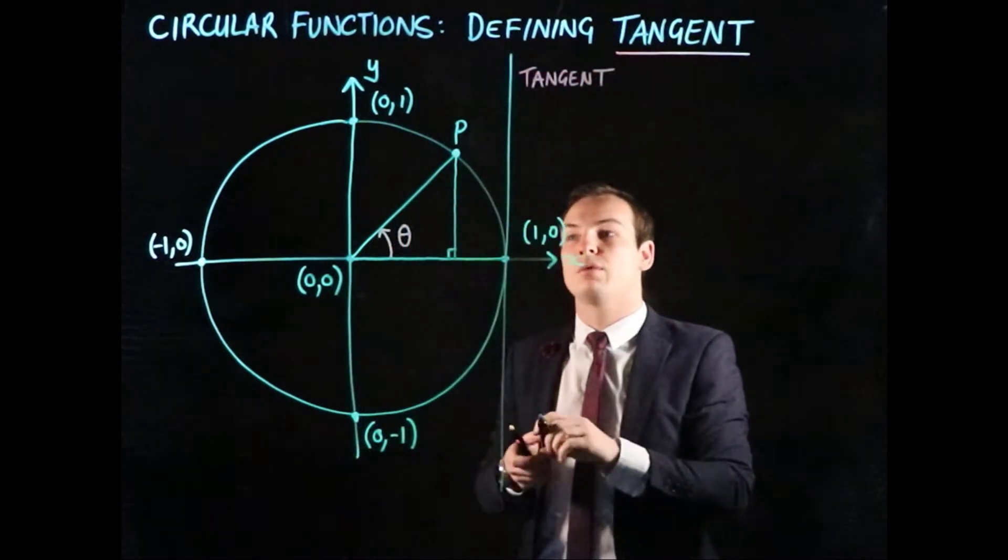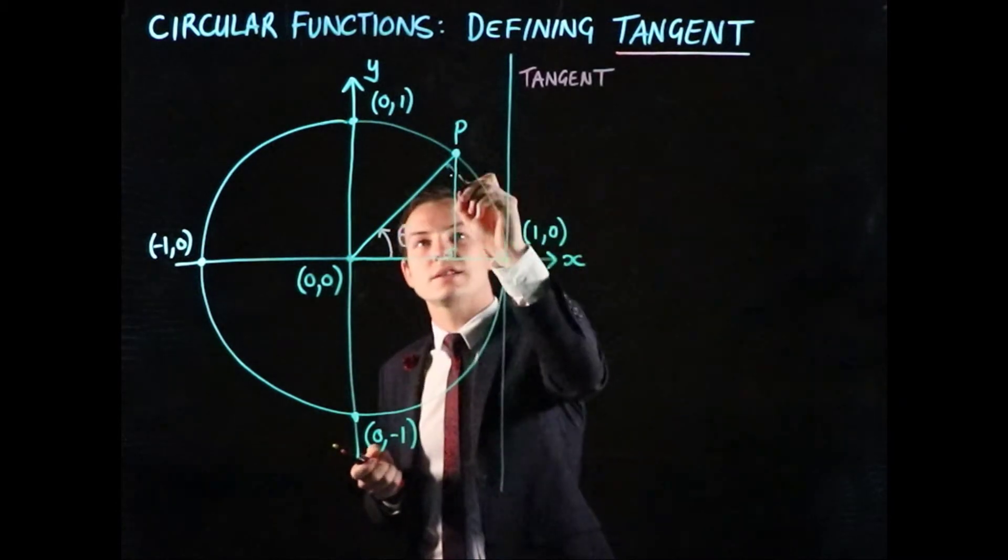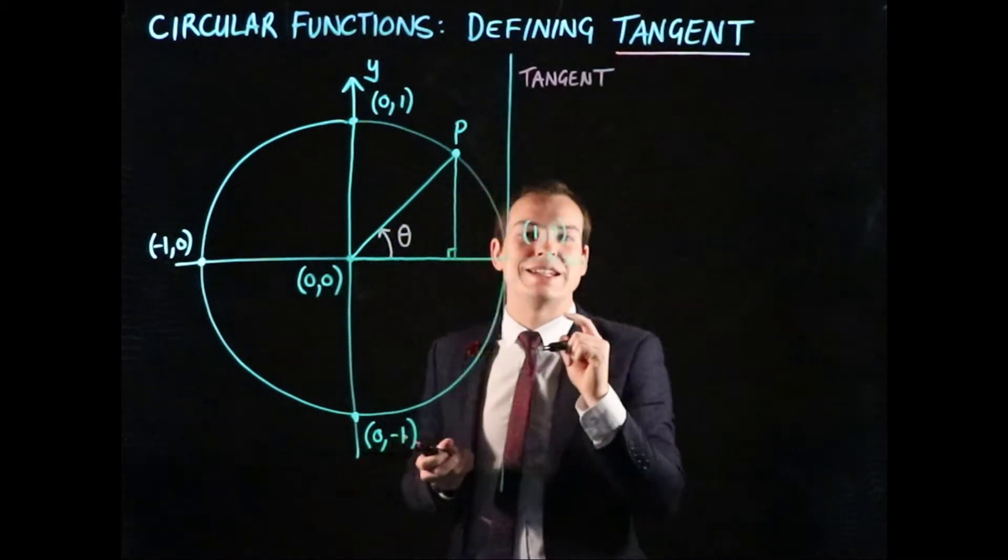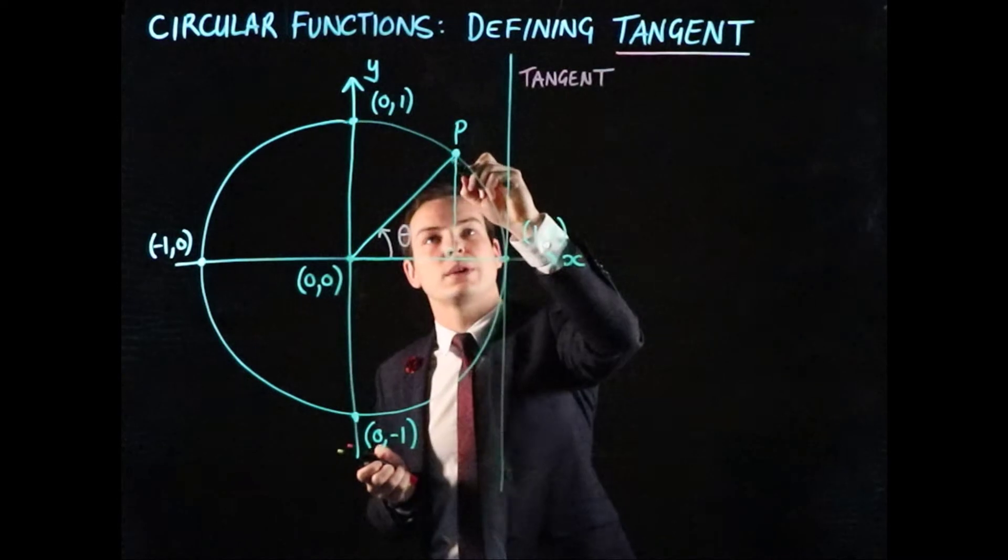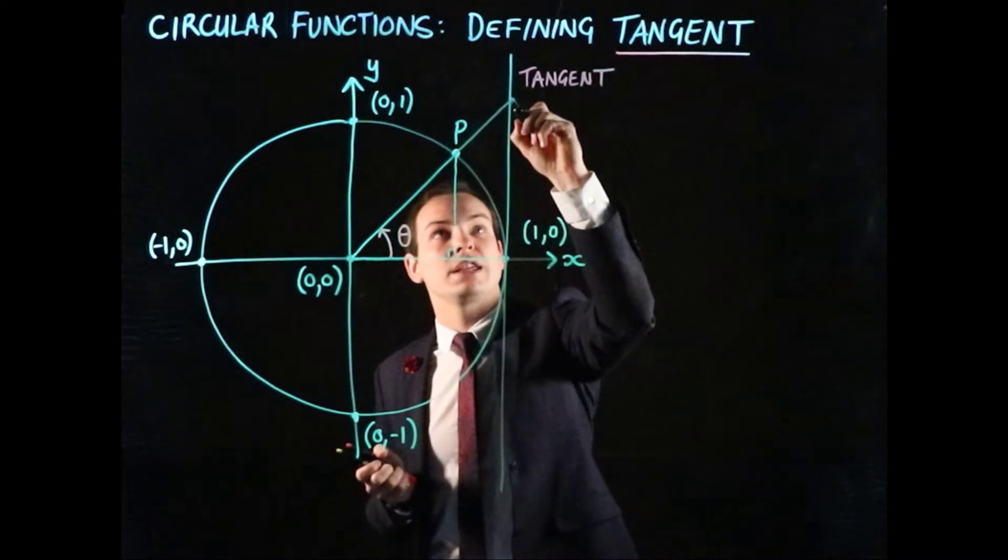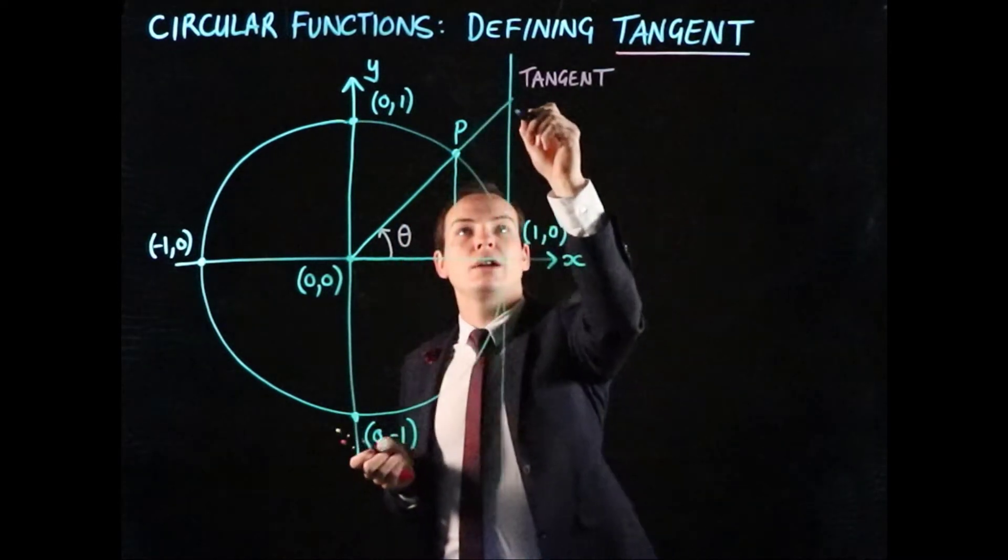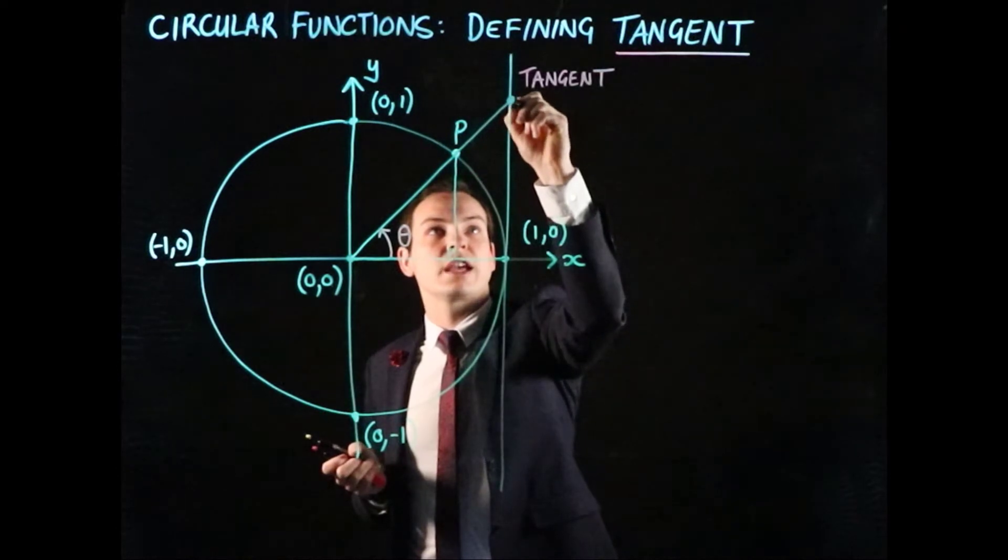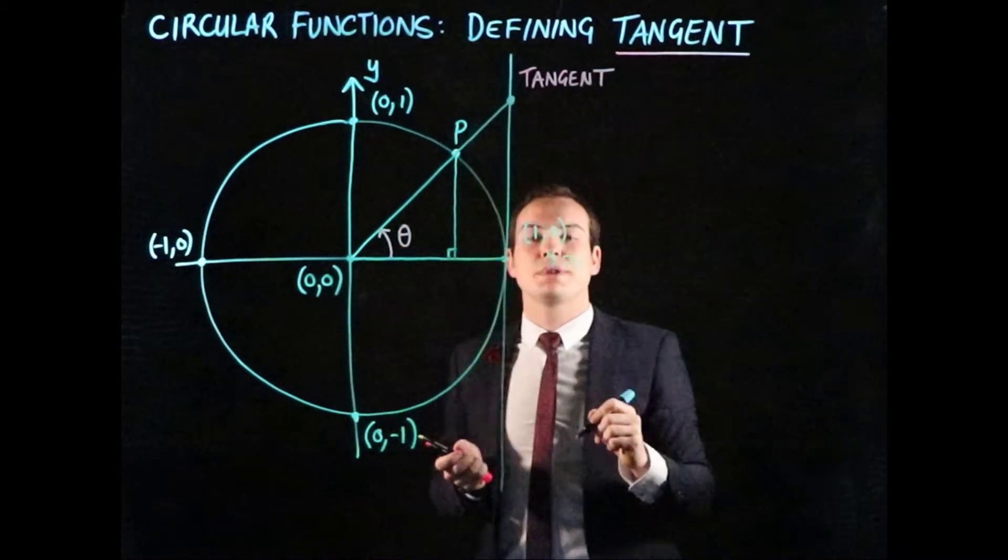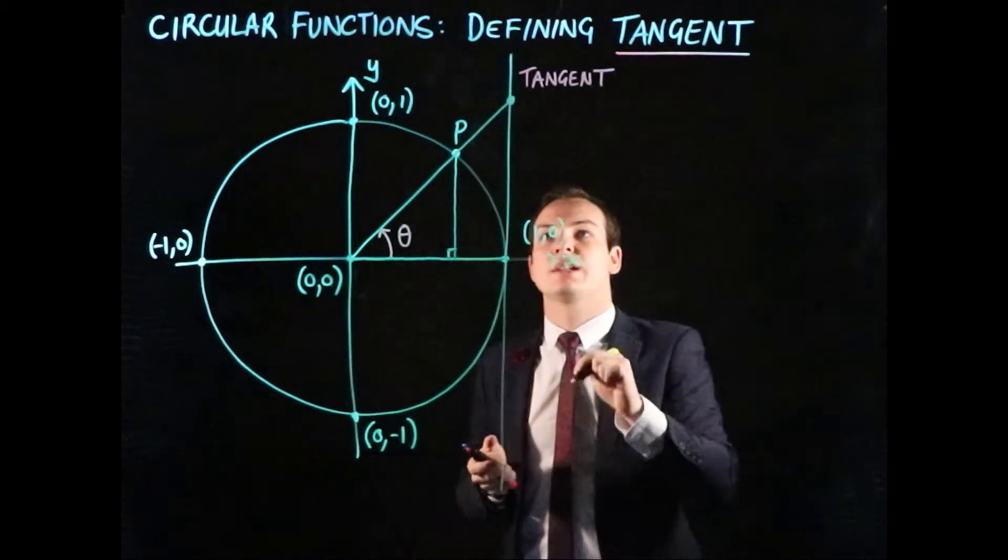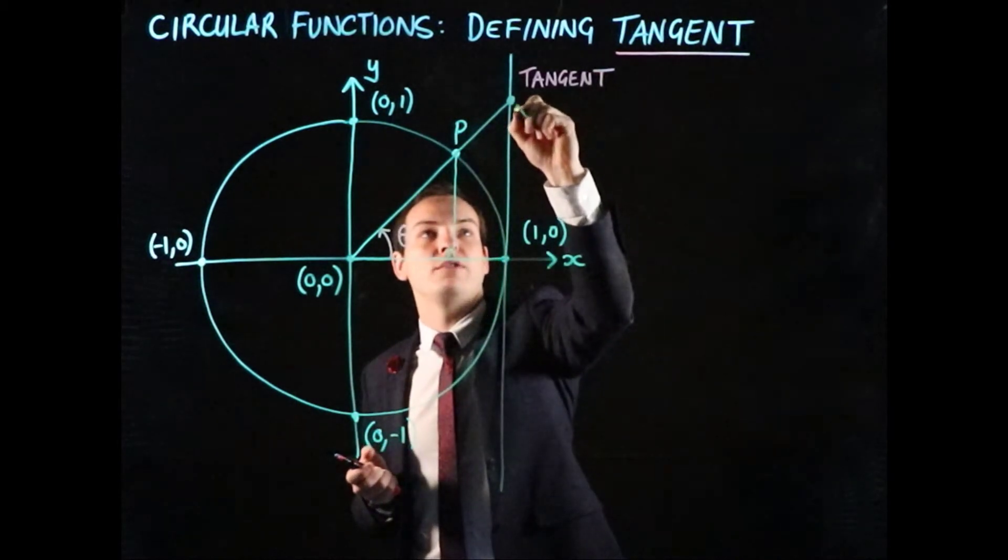To do that, we're going to extend this radius through point P until it touches the tangent line. We're going to continue that line and look at the point where it intersects the tangent line.